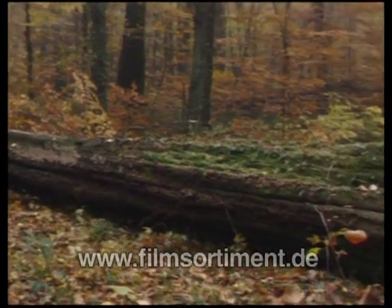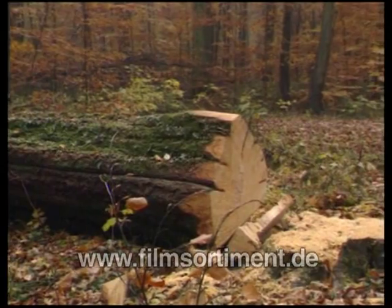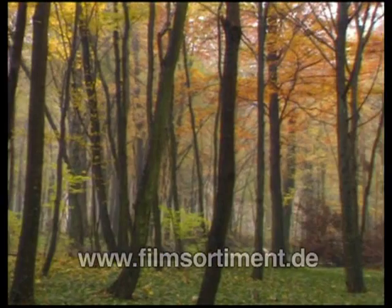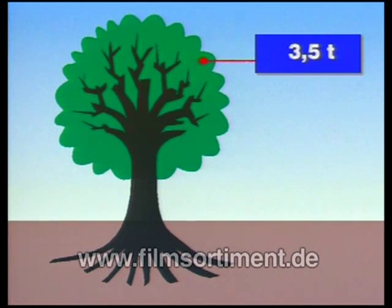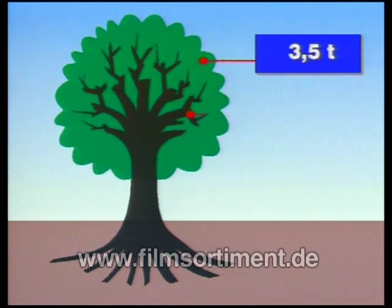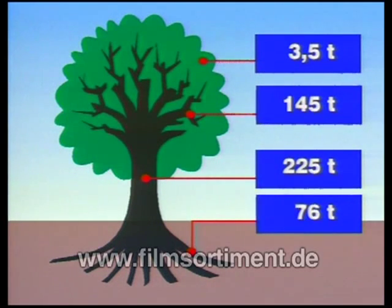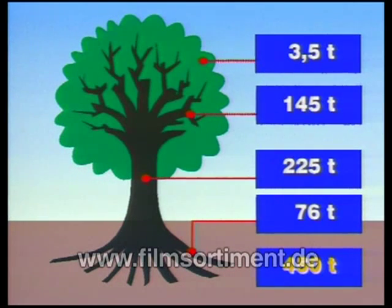Das Wachstum von Bäumen ist beeindruckend. Um Vergleiche zwischen Wäldern zu erleichtern, gibt man das Gewicht trockener Blätter, Äste, Stämme und Wurzeln, bezogen auf eine bestimmte Fläche an. Ein Eichenwald produziert pro Hektar demnach jährlich im Durchschnitt 3,5 Tonnen Blätter, 145 Tonnen Äste und Zweige, 225 Tonnen Stämme, 76 Tonnen Wurzel. Das ergibt insgesamt 450 Tonnen trockene Biomasse.